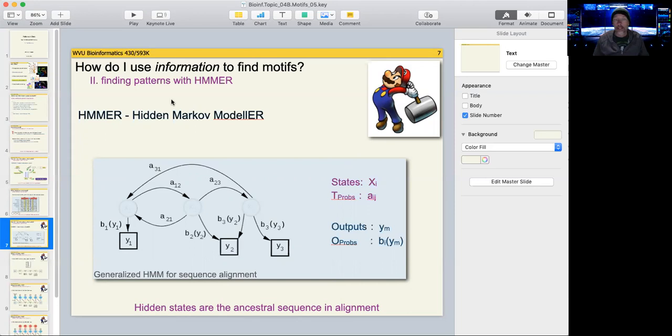You probably remember us discussing hidden Markov models in a different context. This was in building phylogenetic trees, deciding, defining what the ancestral sequence is in an alignment. Here's another depiction of that. A little bit mathematical for us, but the essential take home from this is that there is a hidden state. That's the hidden in the Markov model. There's a hidden state that is the ancestral sequence.